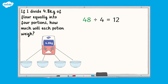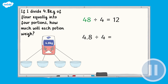In our original problem we needed to divide 4.8 kilograms of flour by 4, using the division calculation 4.8 divided by 4. How is this calculation similar to 48 divided by 4? When we put 4.8 divided by 4 equals 1.2 alongside 48 divided by 4 equals 12 — what do you notice?